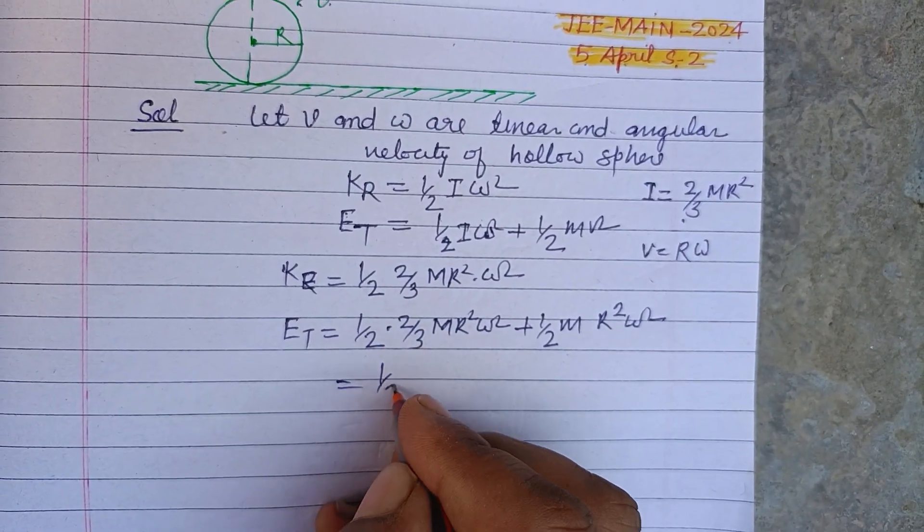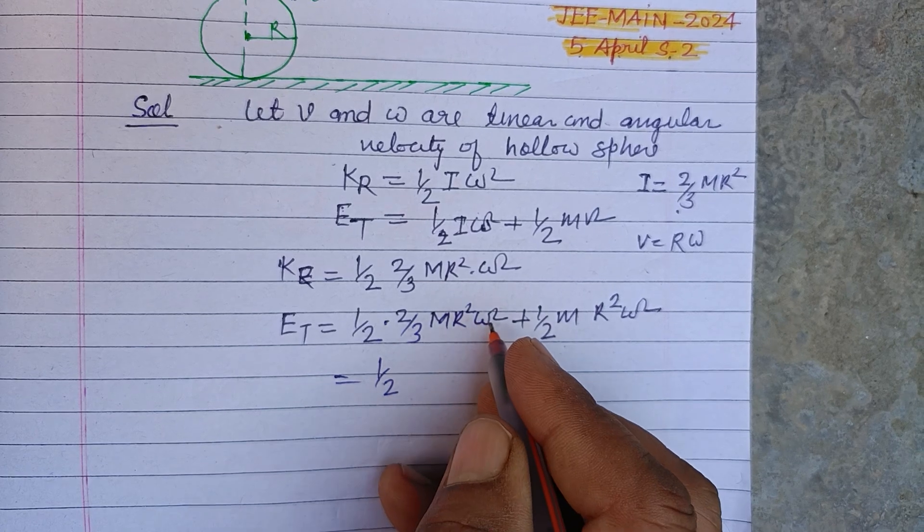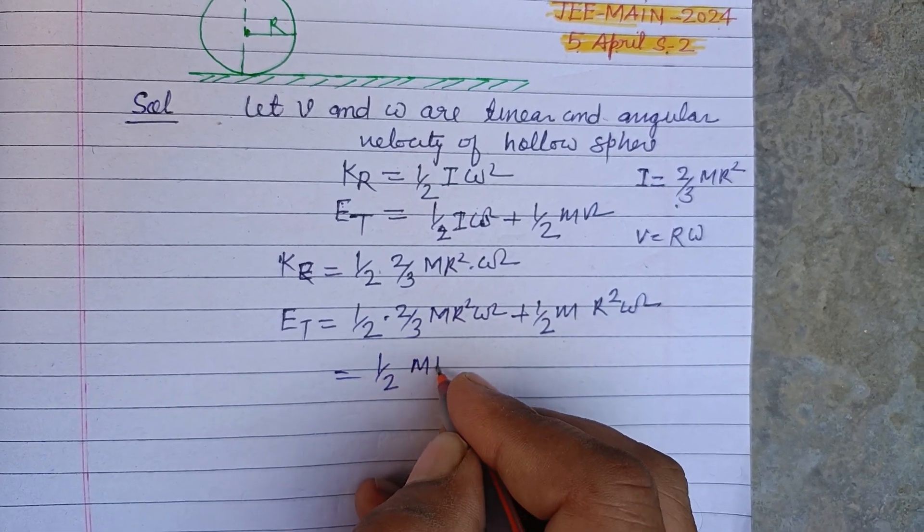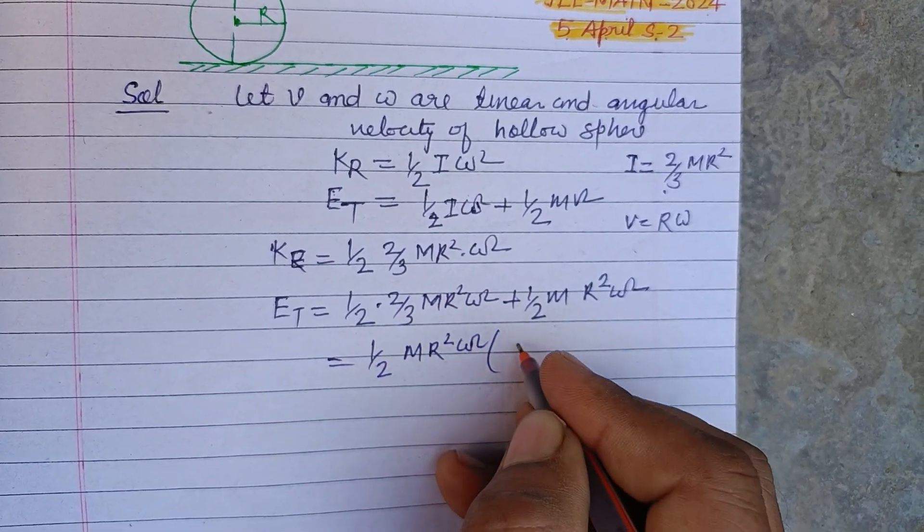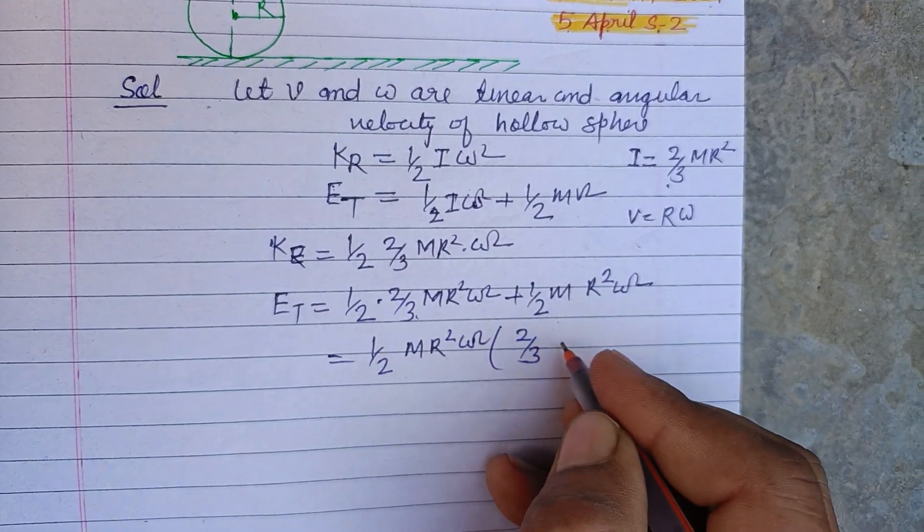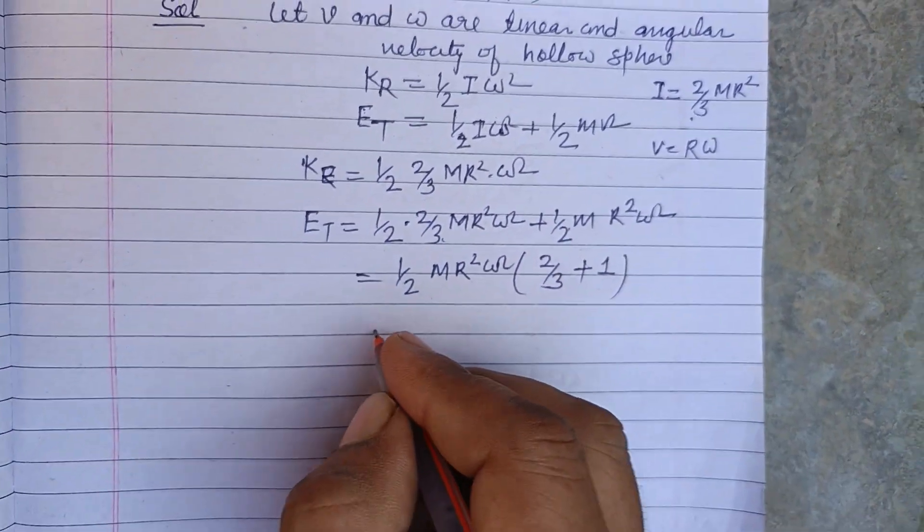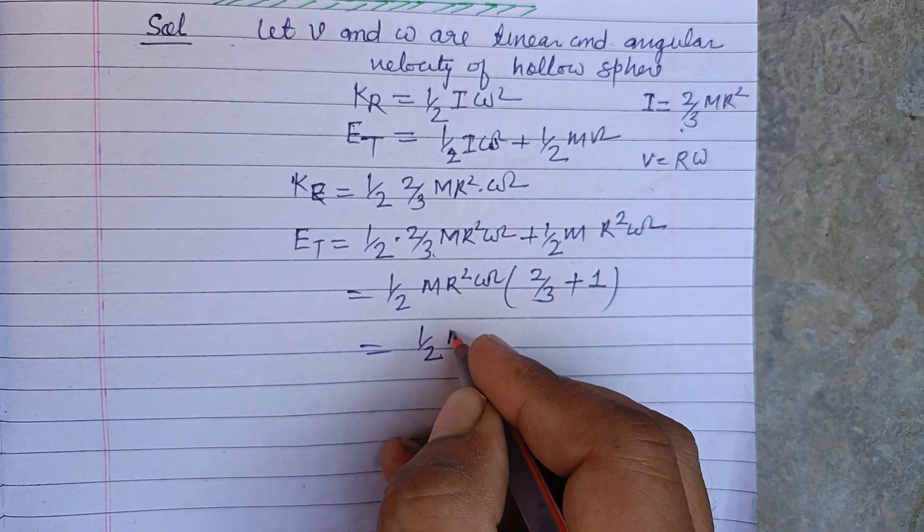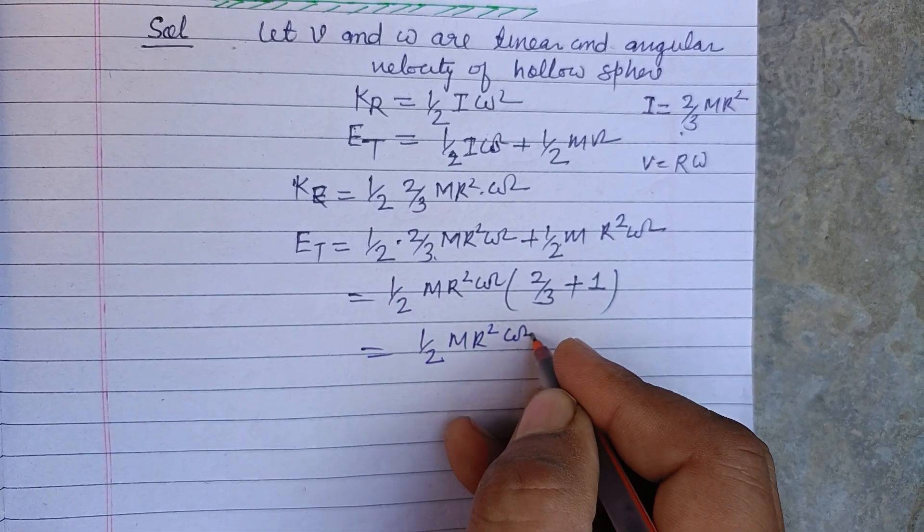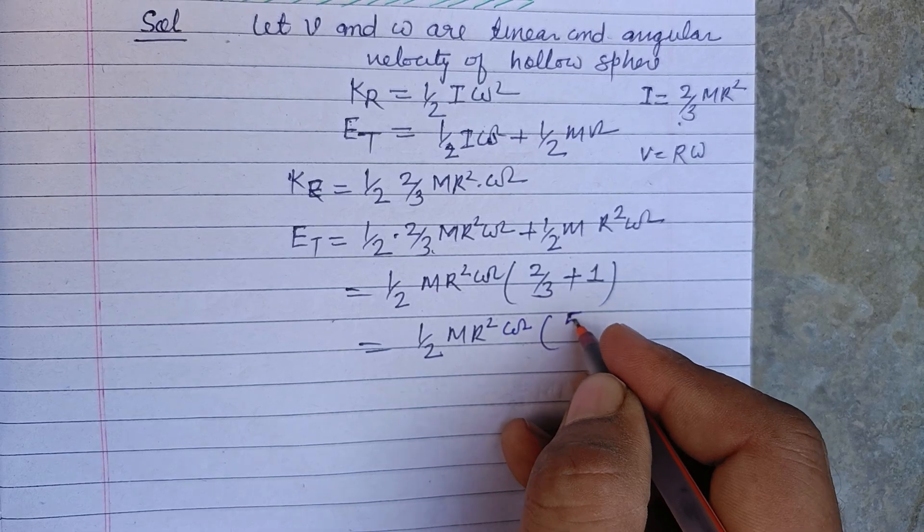Here we take common one by two m r squared omega squared, this is 5 by 3, and here is 1. So half m r squared omega squared, this is 5 by 3.